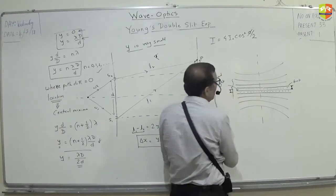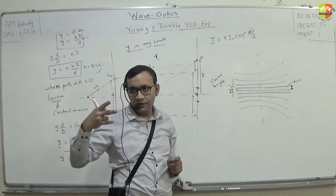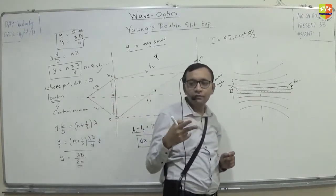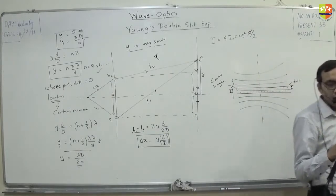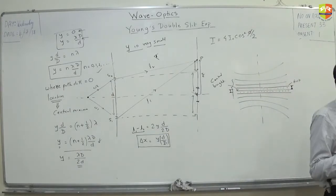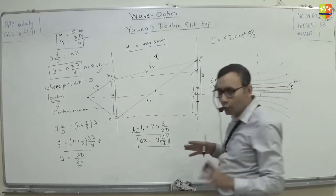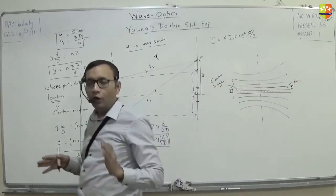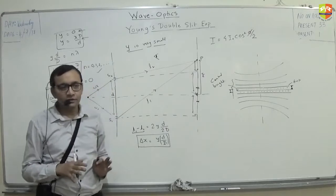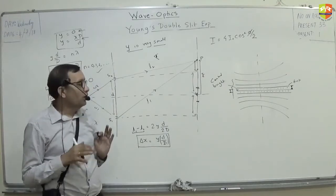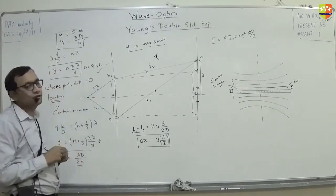Fringe width is defined as the distance between either two consecutive dark fringes or two consecutive bright fringes. Fringe width is the distance between two consecutive bright or two consecutive dark fringes. Any doubt about this? So can you find out how much the fringe width is?